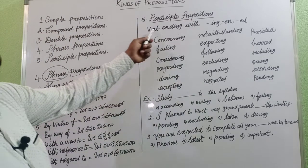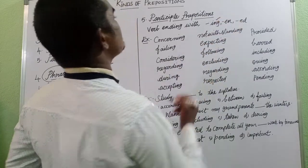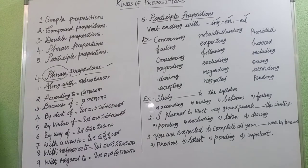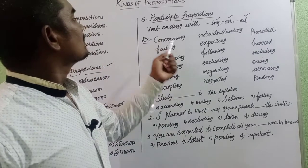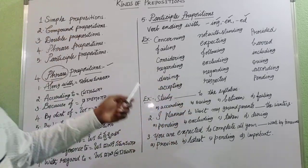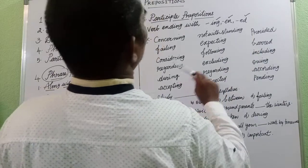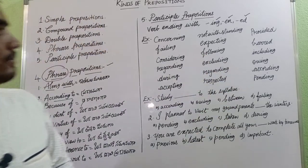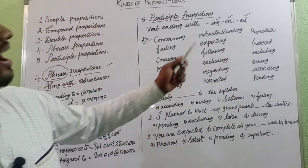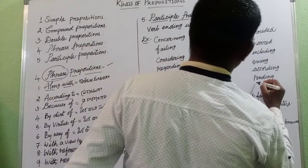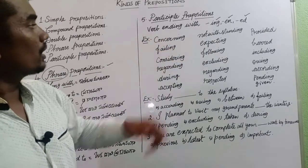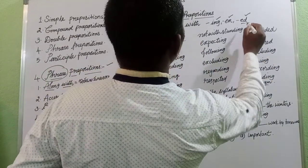Next we have participle prepositions. These are verb forms ending with '-ing' (present participle) or ending with '-ed' or '-en' form (past participle). Examples include: concerning, failing, considering, regarding, during, accepting, notwithstanding, expecting, following, excluding, provided, barred, including, owing, pending, given.